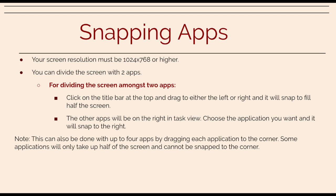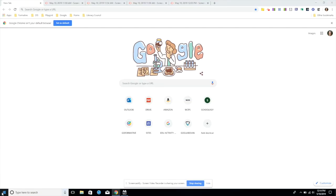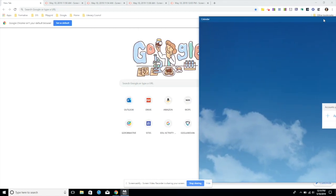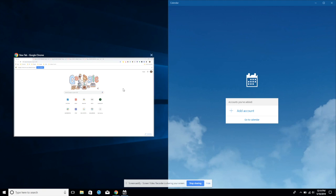You can also snap apps. Your screen resolution must be 1024 by 768 or higher. You can divide the screen with two or four apps. To divide the screen between two apps, click on the title bar at the top and drag to either the left or right and it will snap to fill half the screen. The other apps will be on the right in task view. Choose the application you want and it will snap to the right.